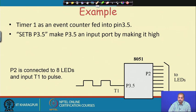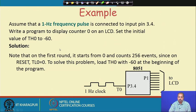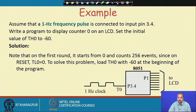Next we look into another example. We assume that a 1 Hz frequency pulse is connected to pin 3.4 and we want to write a program to display counter 0 on an LCD — whatever the counter 0 value is, we put it on the LCD. The initial value of TH0 is set as minus 60. In the first round it starts with 0 and counts 256 events, since on reset TL0 is 0.